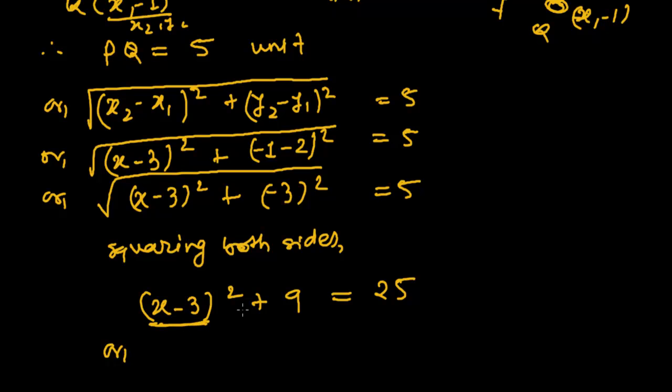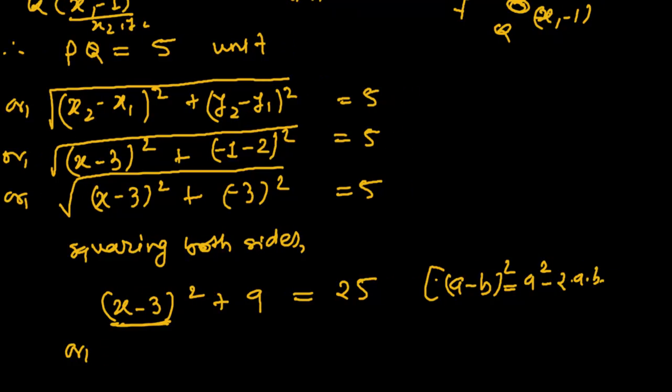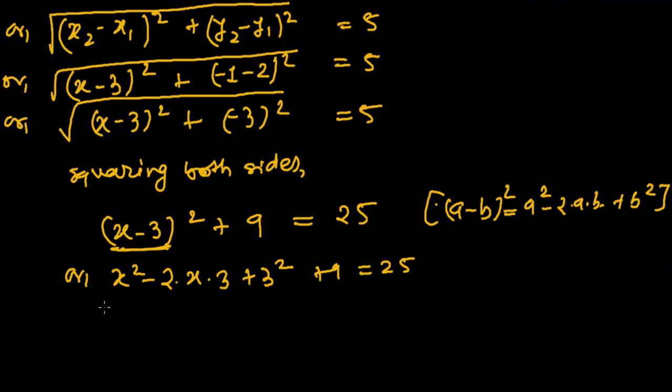Now I am using here the formula that is called (a - b)². It is in the form of (a - b)² and its formula is a² - 2ab + b². Exactly the same formula I am using here. (a - b)² means a² means x² minus 2, a means x, b means 3. a² - 2ab + b² + 9 = 25. So again, in the next step, its plus 9.